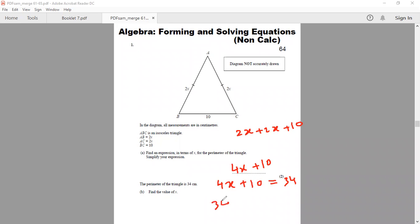As we know that 34 take away 10 will be 24. And inverse operation of multiplying by 4 would be dividing by 4. So 24 divided by 4 will be 6. So the value of X is 6 centimeters.